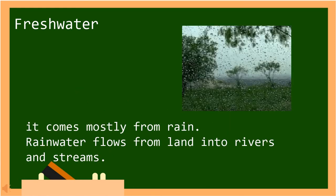Fresh water also comes mostly from rain. Rain water flows from land into rivers and streams. In Tagalog: nagmumula ito karamihan sa ulan. Ang tubig ulan ay dumadaloy mula sa lupa patungo sa mga ilog at sapa.